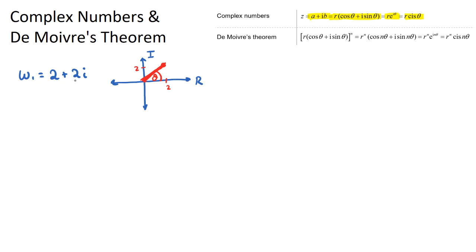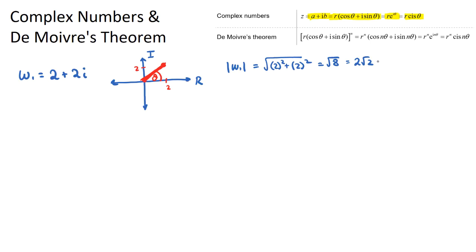Let's convert our complex number into modulus-argument form. The modulus, expressed as |W1|, is found using Pythagoras — the square root of each component squared: √(2² + 2²) = √(4 + 4) = √8, which is 2√2. So 2√2 is the modulus — that is the length of the line.